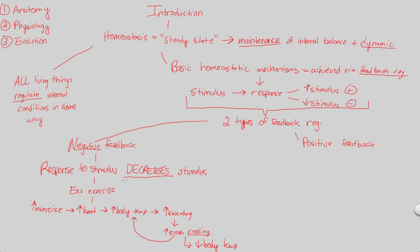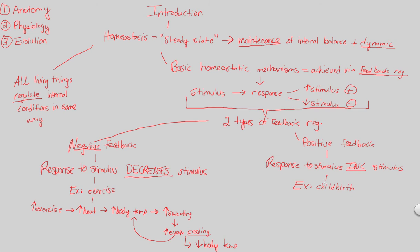And then positive feedback — it's much the opposite and less common, but still very important. The response to the stimulus here doesn't decrease the stimulus, but rather increases it. The classic example that some of you may already be familiar with is childbirth. Childbirth is a positive regulatory feedback system — it's a homeostatic mechanism. What happens in childbirth? To put it simply, as childbirth is happening, there's going to be an increase of pressure from the baby's head trying to exit during the birthing event.